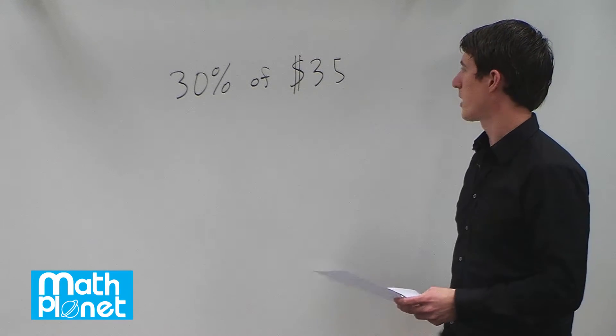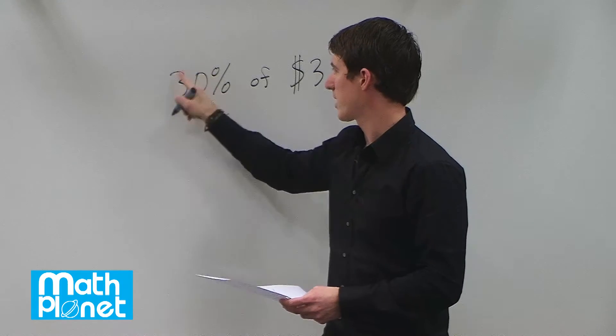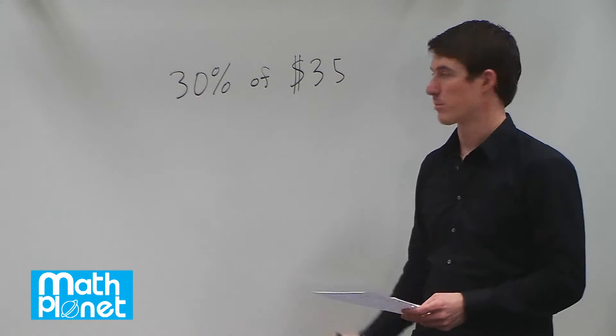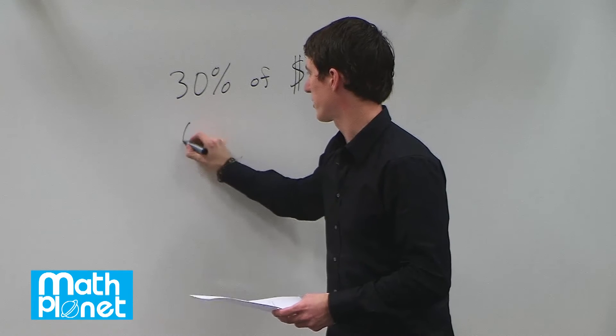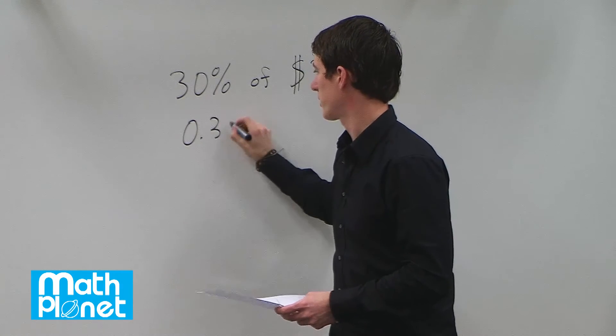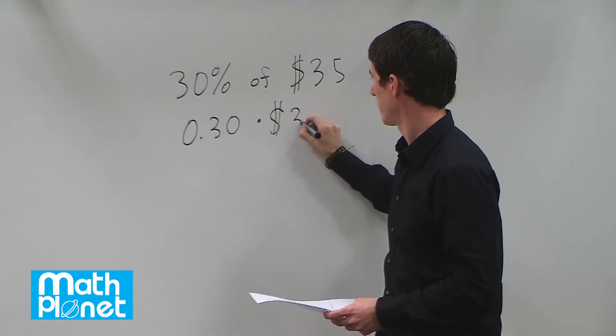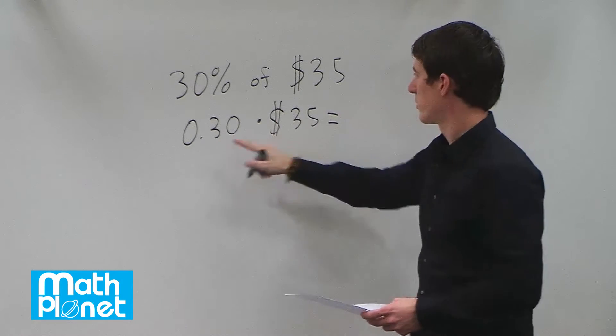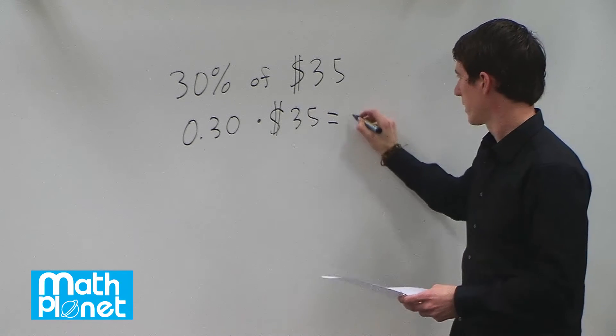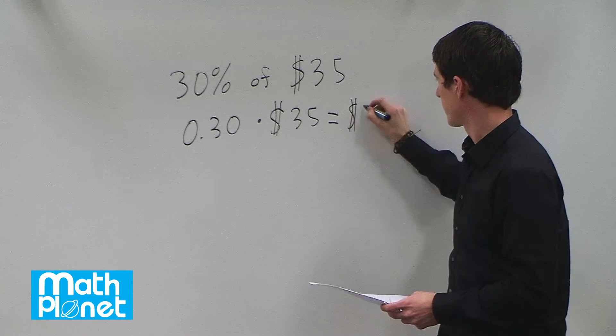30% of $35 is the same as writing this as a decimal times this number. So 30% is the same as 0.30, and then we say times $35. So 0.3 times 35 gives us $10.50.